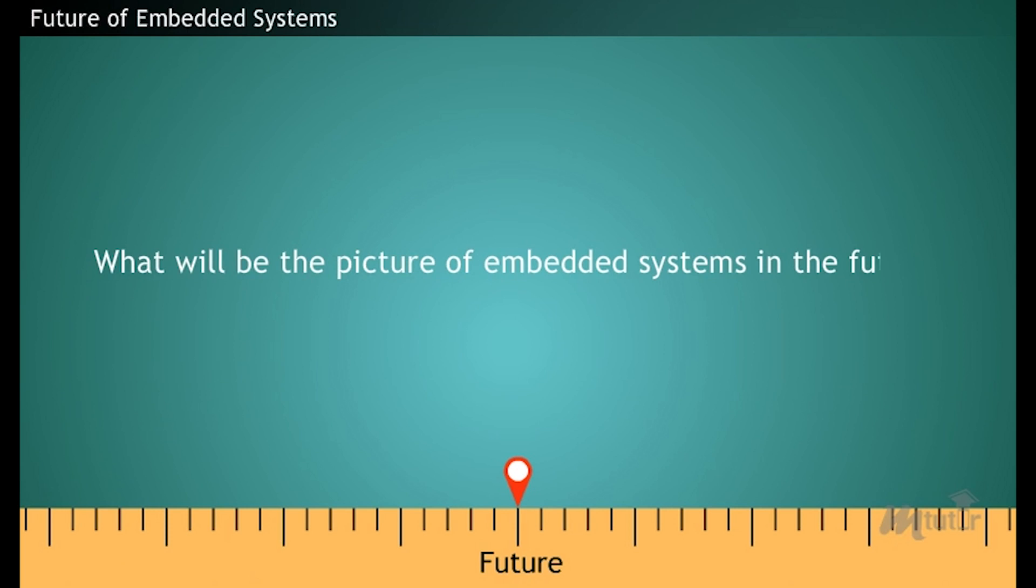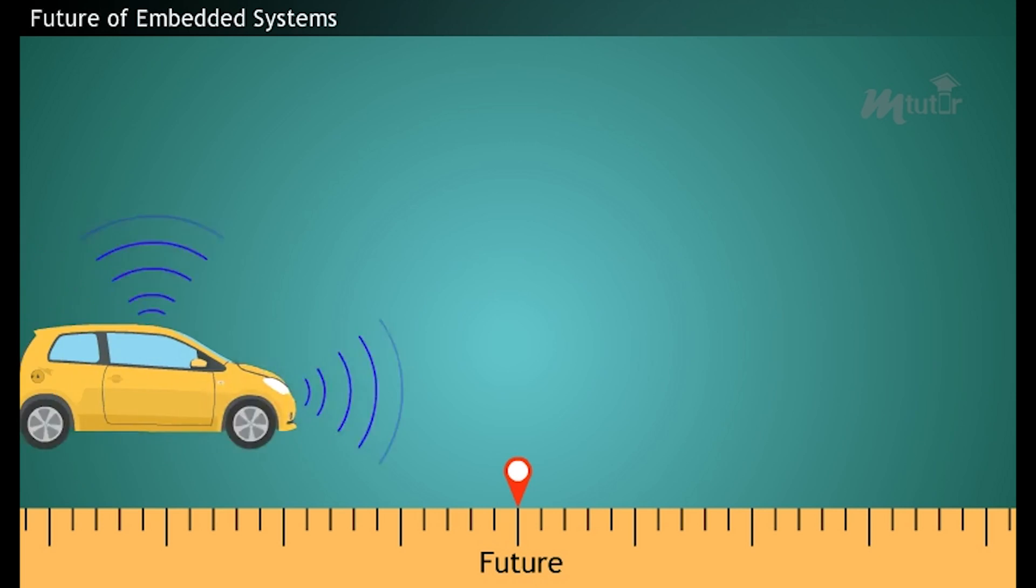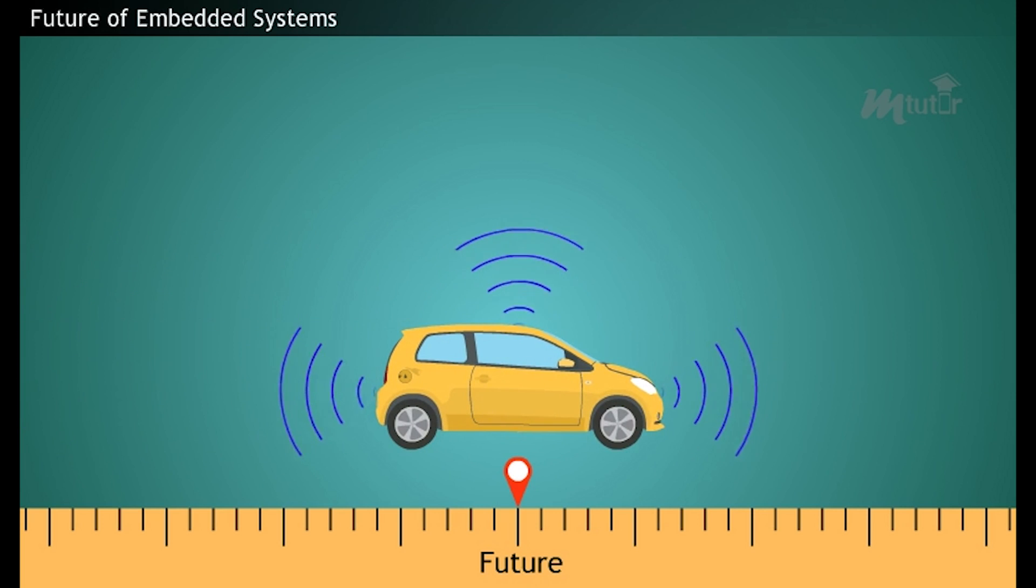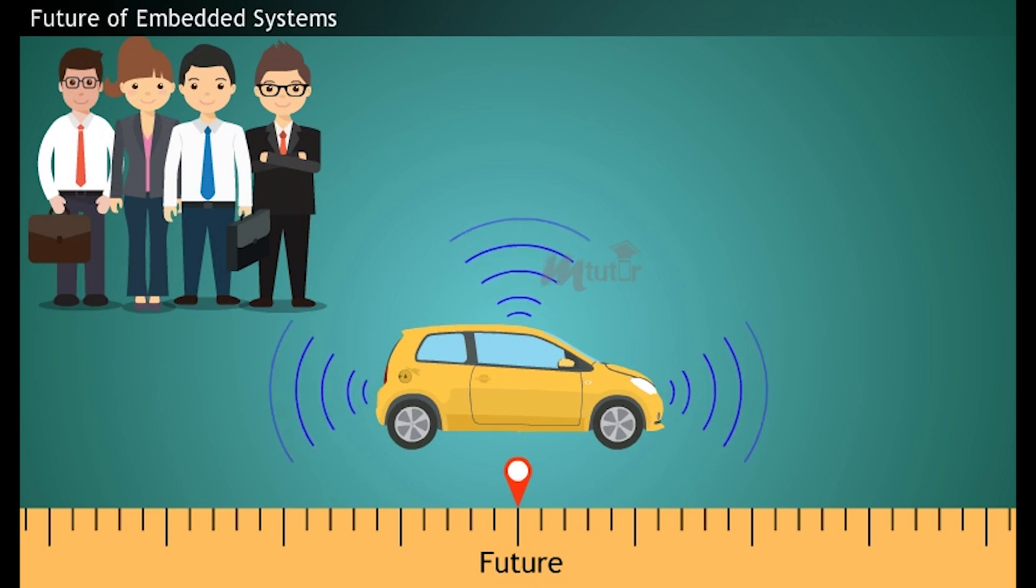But what will be the picture of embedded systems in the future? Predictions say autonomous network will become the talk of the town in the future. One of the most awaited projects in this arena is the self-driving cars. It's a fully automated driverless car. Market players believing this technology is going to hit the streets soon by 2020 and it's going to change everything. Let's hope for the best.